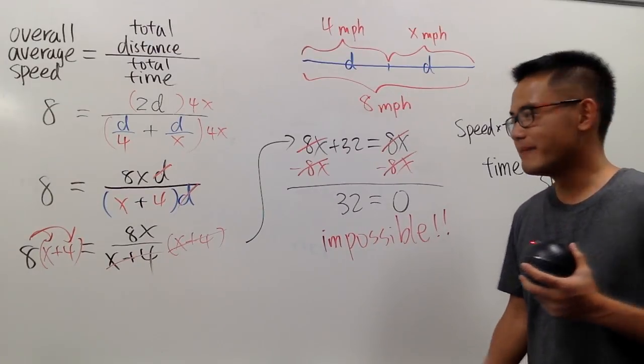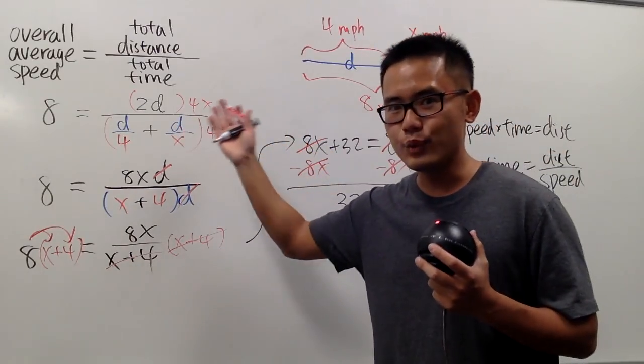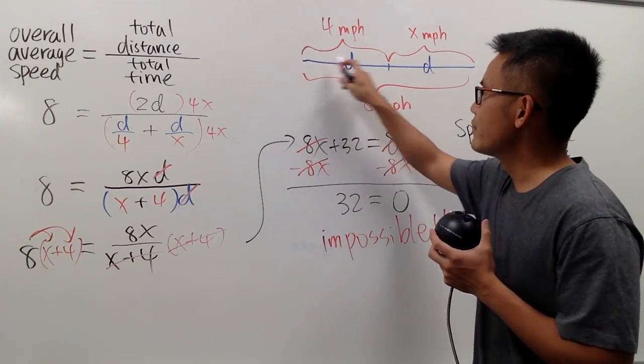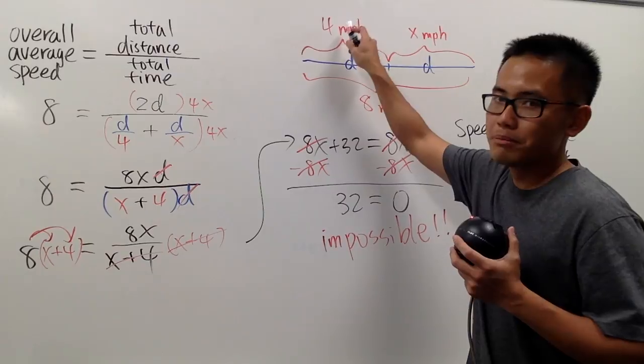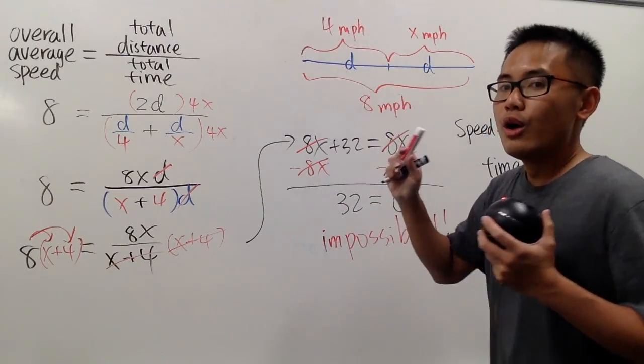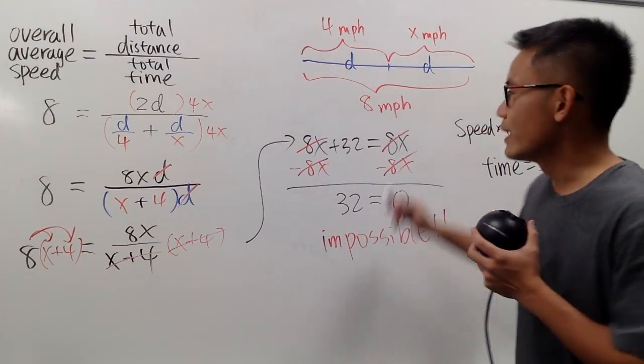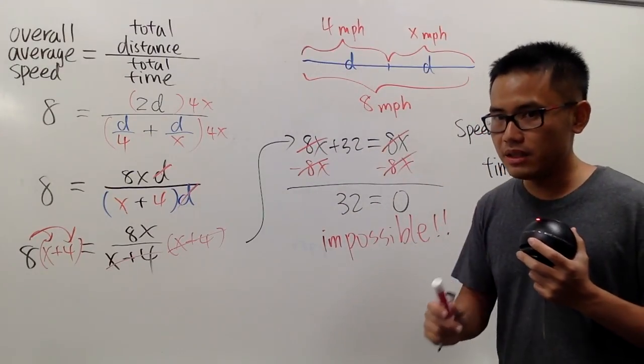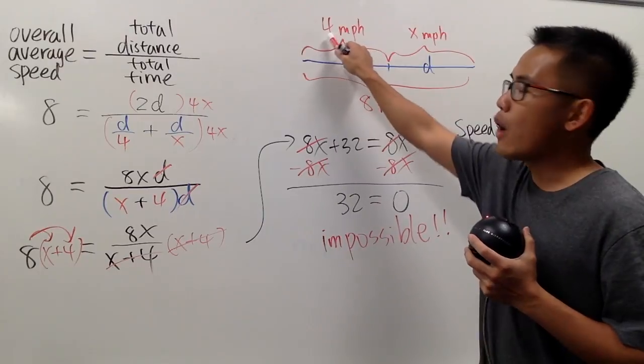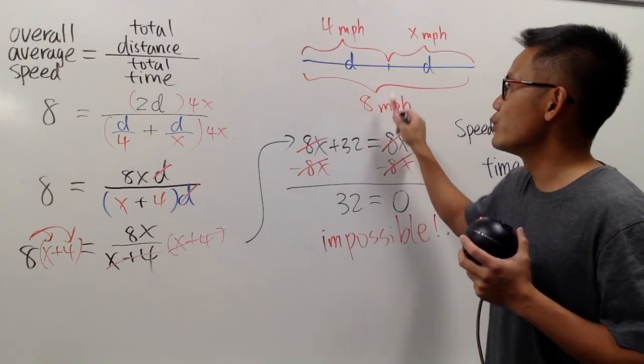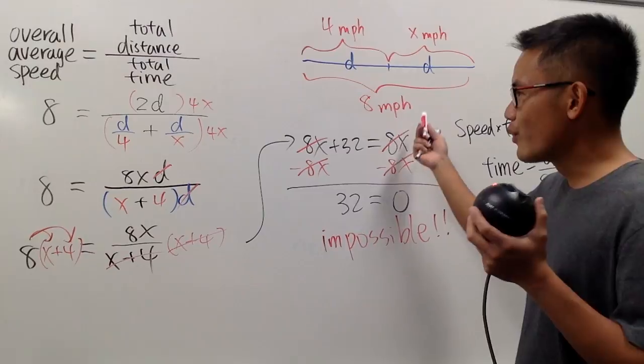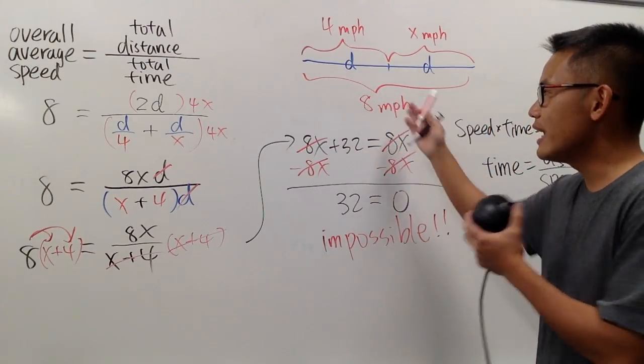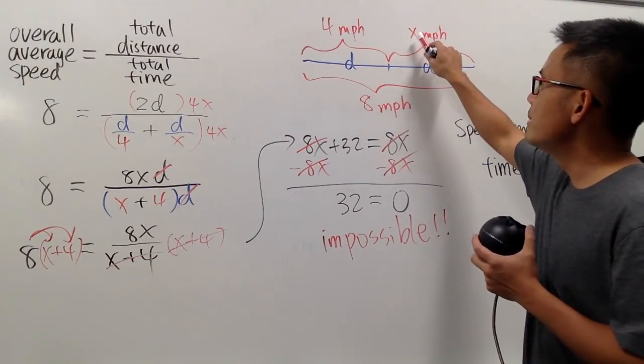So as you can see, this is the setup and nothing was wrong. But the truth is, seriously, if we only run the first half of the marathon with 4 miles per hour, no matter how fast we run during the second half, the overall average speed cannot be more than twice, right? More than or equal to twice as the first half. So of course, it cannot be 8, it cannot be 8.2, it cannot be 10, it cannot be 9.